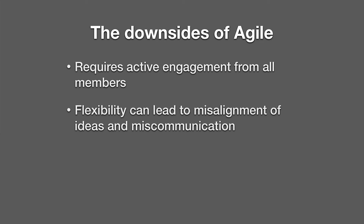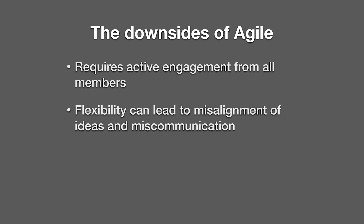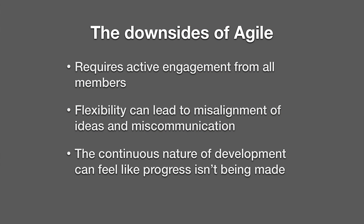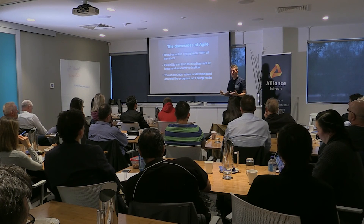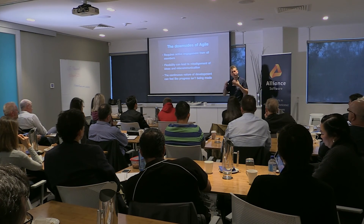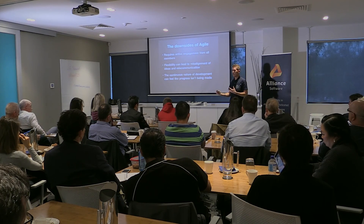Flexibility can lead to a misalignment of ideas and miscommunication. If you've got a lot of change going on and team members are not good at coping with change, you can end up with different people on different pages, not actually understanding how the process is supposed to work. You get errors that way — people thinking they've done the right thing, but ending up not being the case. And the continuous nature of development can feel like progress isn't being made. You're doing all of these small deliveries, and sometimes you can feel like we've been going for ages but my full vision hasn't been realised. You can end up feeling negatively about the project just because you haven't had that big bang you were hoping for at the end.